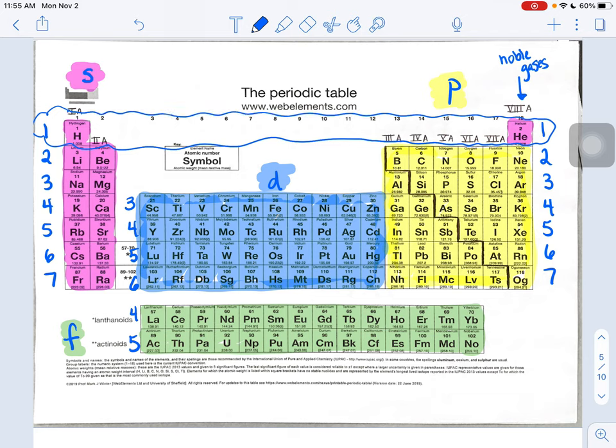We're in the first energy level here. In the first energy level, what orbitals exist? So what cloud shapes exist when you're really close to the nucleus? The cloud shapes that exist really close to the nucleus? Well, in that row one, I only see pink boxes, which represent S-shaped clouds.